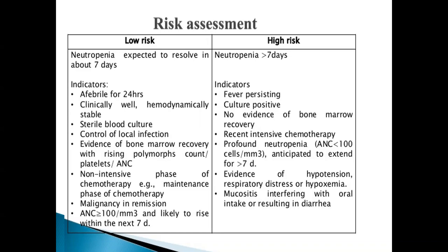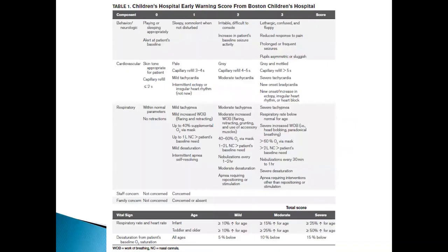In high-risk profound neutropenia, ANC less than 100 cells per milliliter is anticipated to extend for more than seven days. In the non-intensive phase of chemotherapy, for example maintenance phase, high-risk evidence includes hypotension, respiratory distress, or hypoxemia. In high risk, mucositis interferes with oral intake or results in diarrhea. In low risk, ANC is more than 100 and is likely to rise within the next seven days.